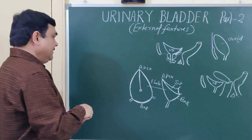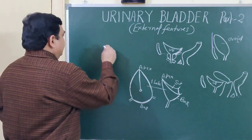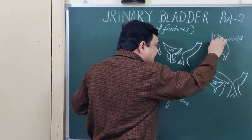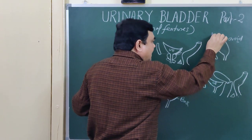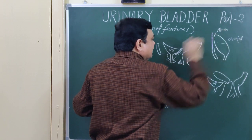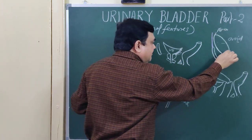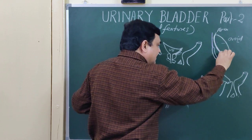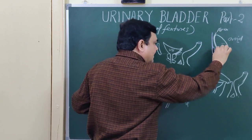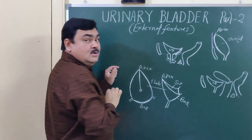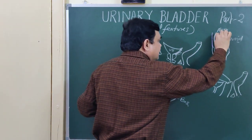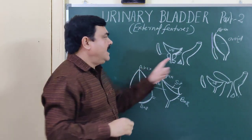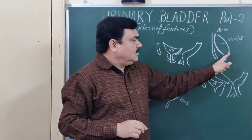In the case of an empty bladder in adults, when the bladder is full, the external features will change. In this diagram you can see the apex here and the base here, and this surface is the anterior inferior surface.